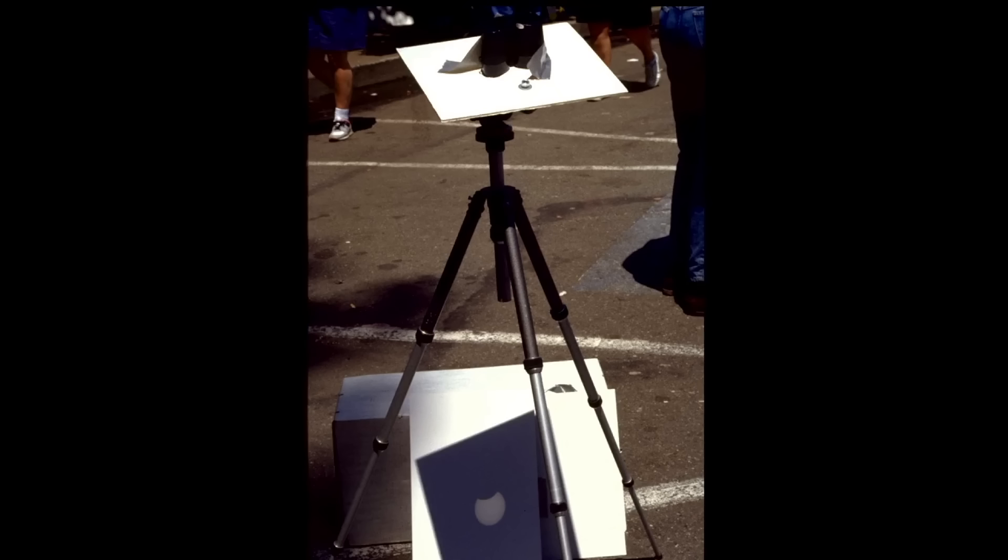You can use a small telescope or binocular to project an image of the sun like you see here on this screen. Do not look through the telescope or a binocular. Only look at the projection on the screen. If you use a binocular, only use one of the two lenses. Block the other. Also be aware that you could ruin your eyepiece with the concentrated sunlight passing through. Here's a closer view of a binocular projection. It's sharper and brighter than a pinhole projection.